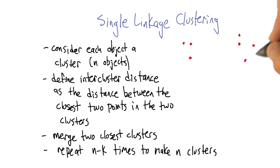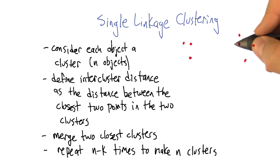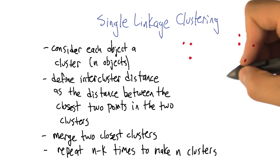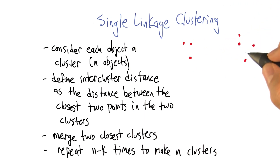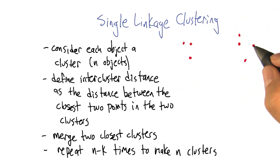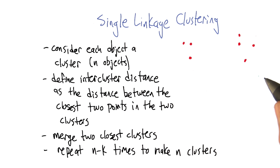Let's imagine we've got these objects — these little red dots. We'll imagine that they're objects. And just because it would be hard to write down all the distance values between them, let's just use the two-dimensional space — the distances on the slide — as the distances. So if you were asked to cluster this, how would you do it? What do you think the groupings ought to be?